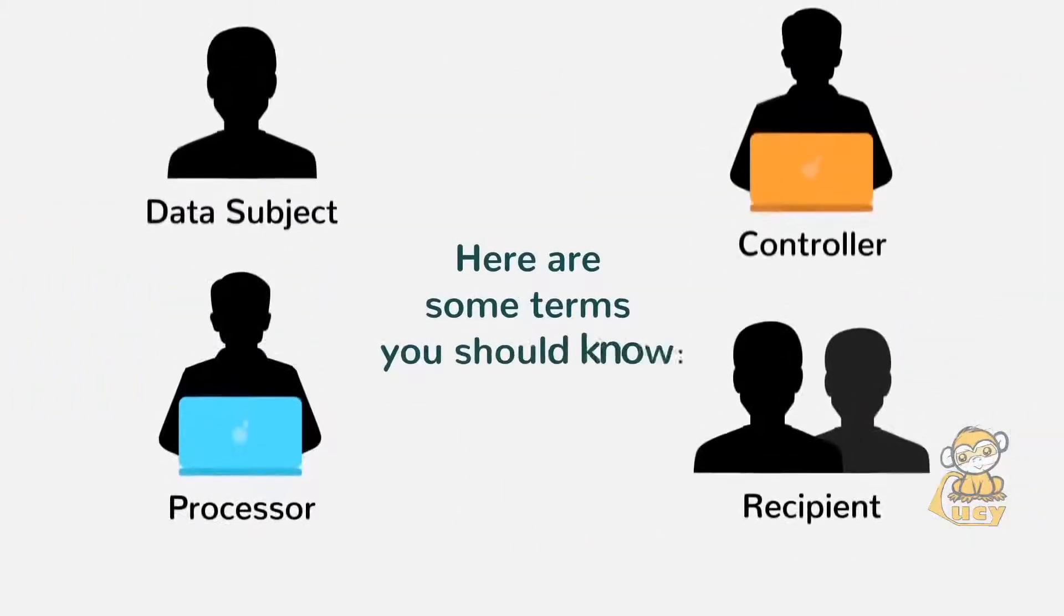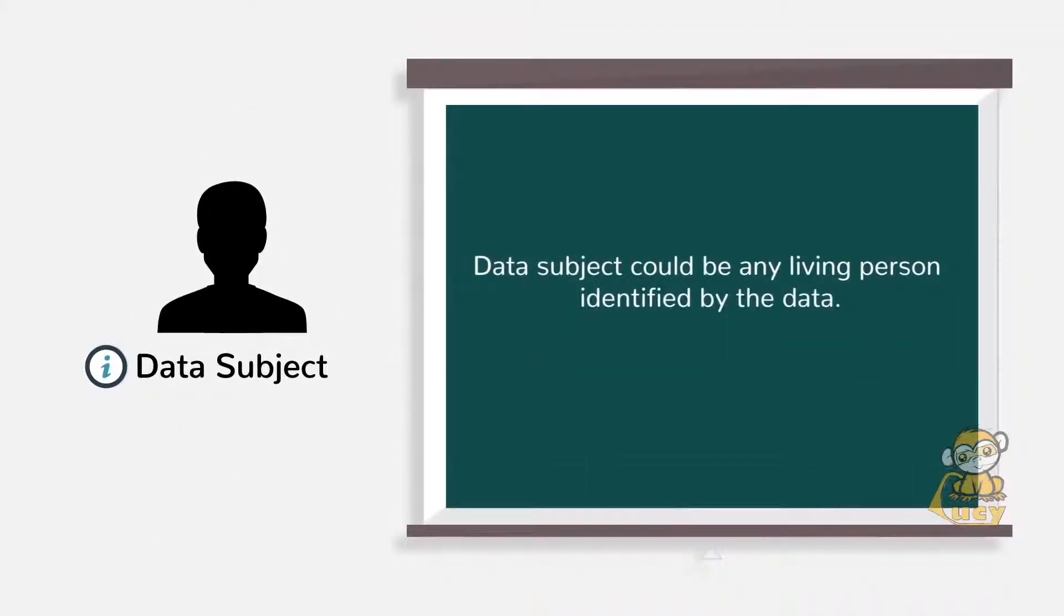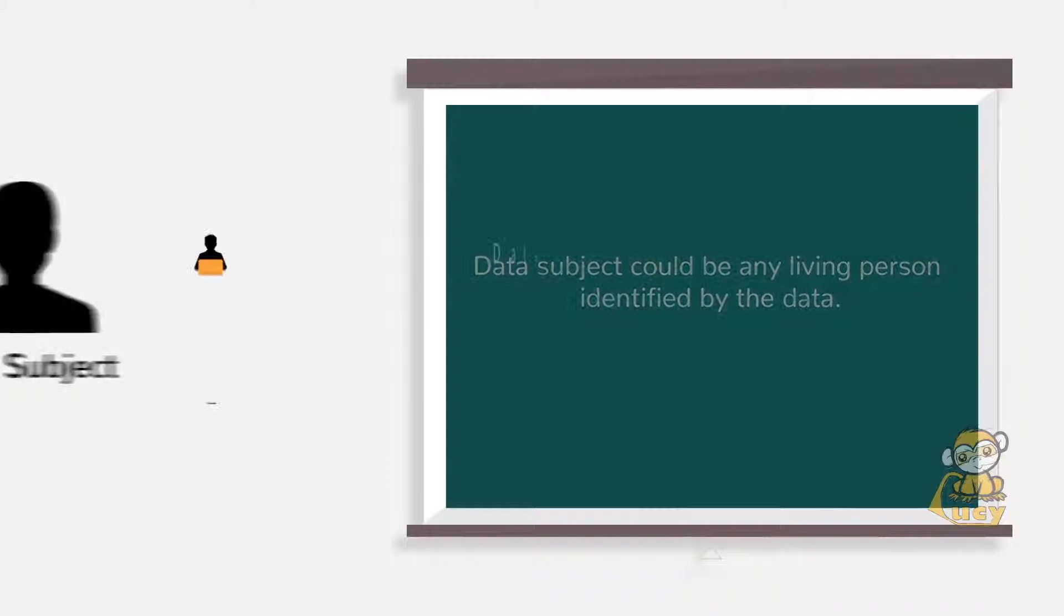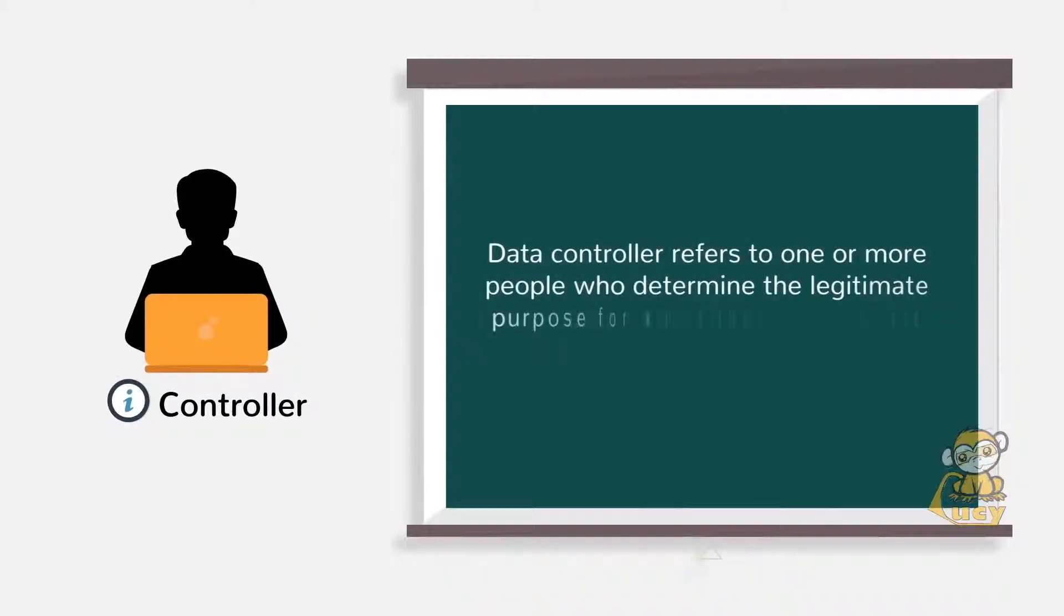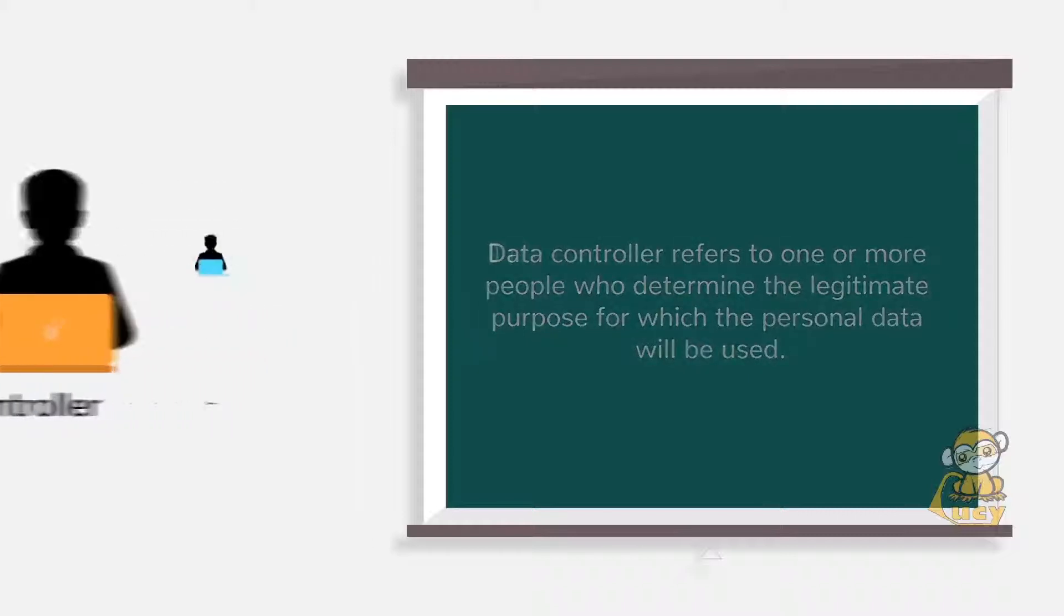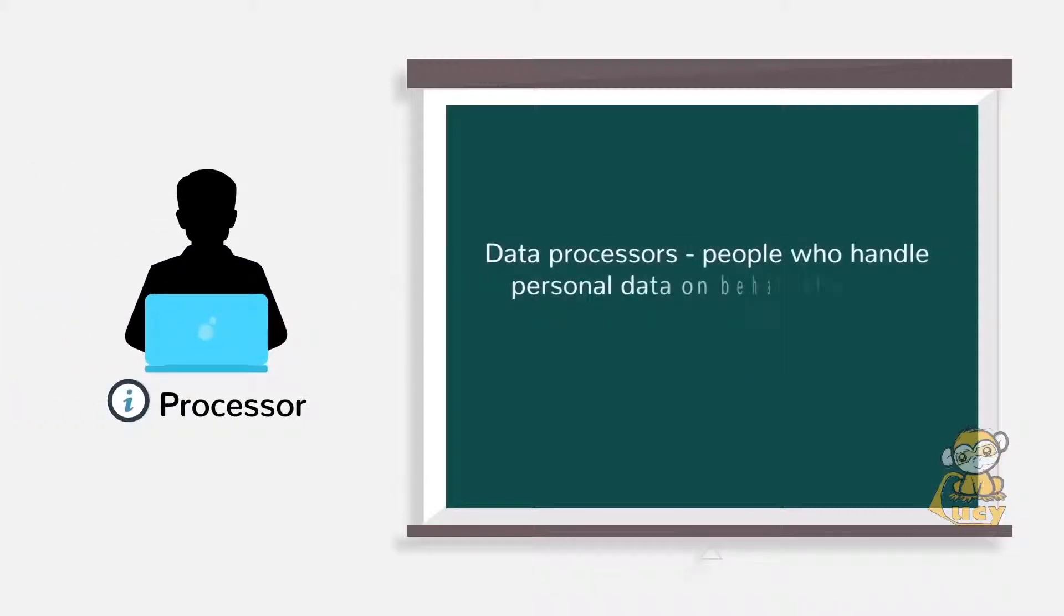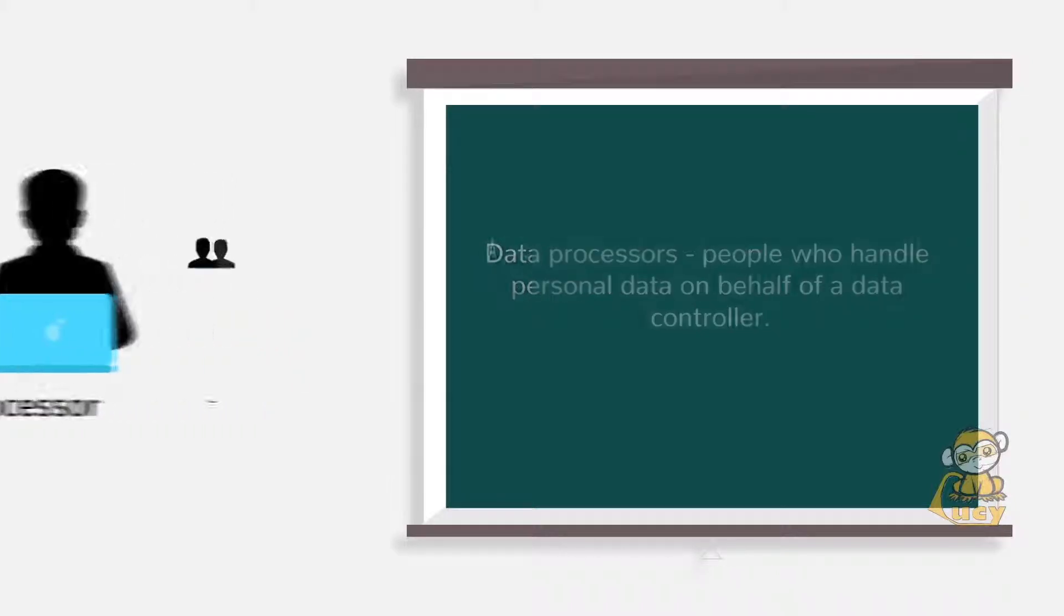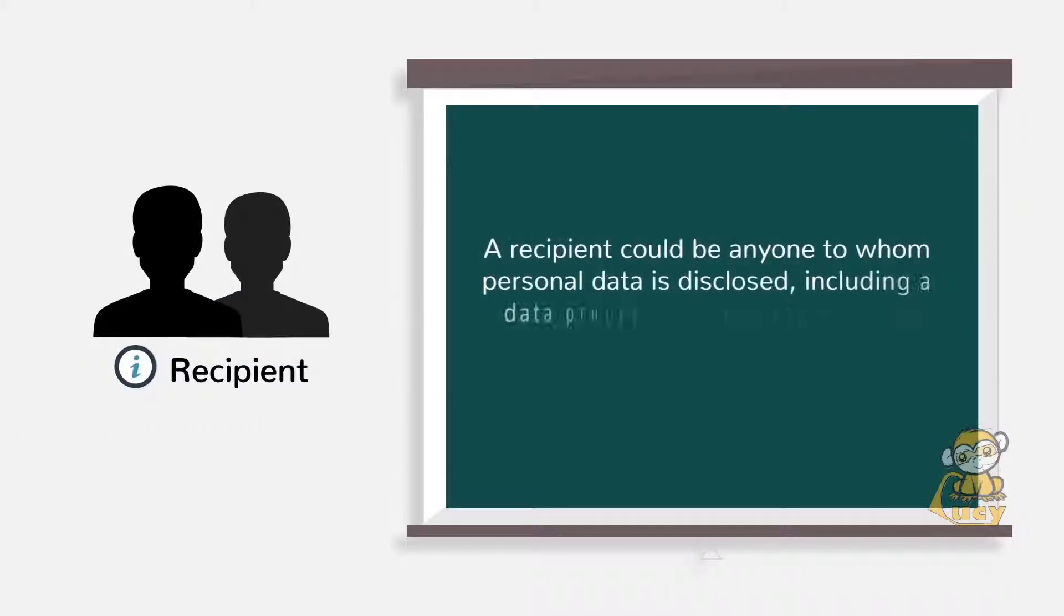Here are some terms you should know. Data subject could be any living person identified by the data. Data controller refers to one or more people who determine the legitimate purpose for which the personal data will be used. People who handle personal data on behalf of a data controller are called data processors. A recipient could be anyone to whom personal data is disclosed, including a data processor, a witness, or other employees.